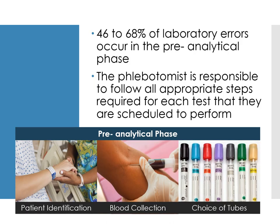According to your book, 46 to 68% of laboratory errors occur in the pre-analytical phase. In the lab, there are three phases: pre-analytical, analytical, and post-analytical. In the pre-analytical phase, that's where patient identification, blood collection, and choice of tubes fall under.